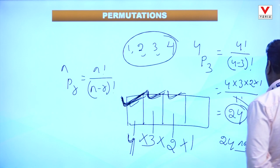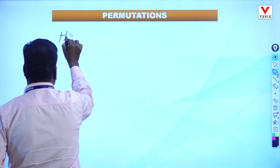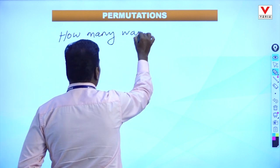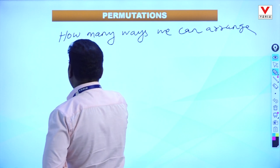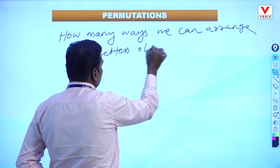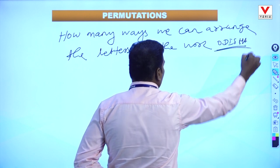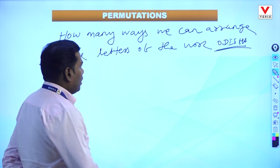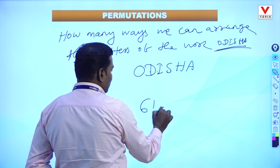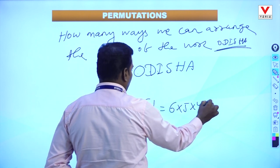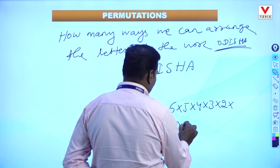Another example: how many ways can we arrange the letters of the word Odisha? In Odisha there are 6 letters: O, D, I, S, H, A — that is 6 factorial. 6 factorial means 6 into 5 into 4 into 3 into 2 into 1. 6 times 5 is 30, times 4 is 120, times 3 is 360, times 2 is 720. We can arrange the letters of Odisha in 720 ways.